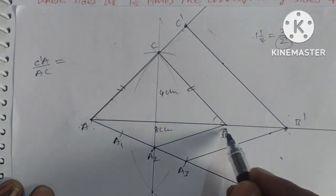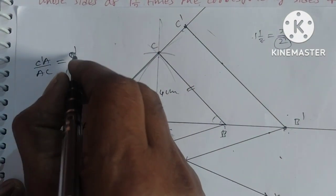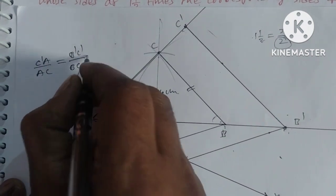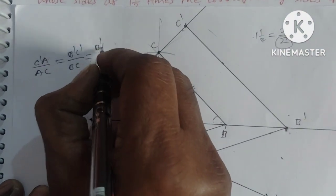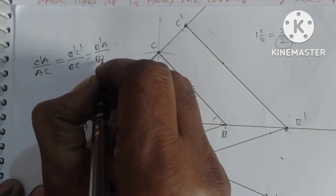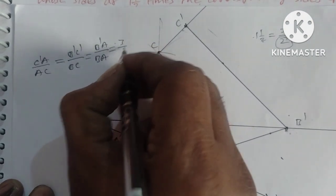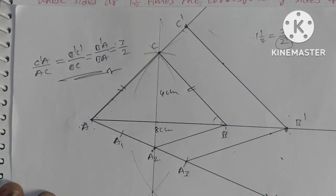The ratio AC/AC equals B dash C dash by BC. This means B dash A by BA equals 3/2, which is our answer.